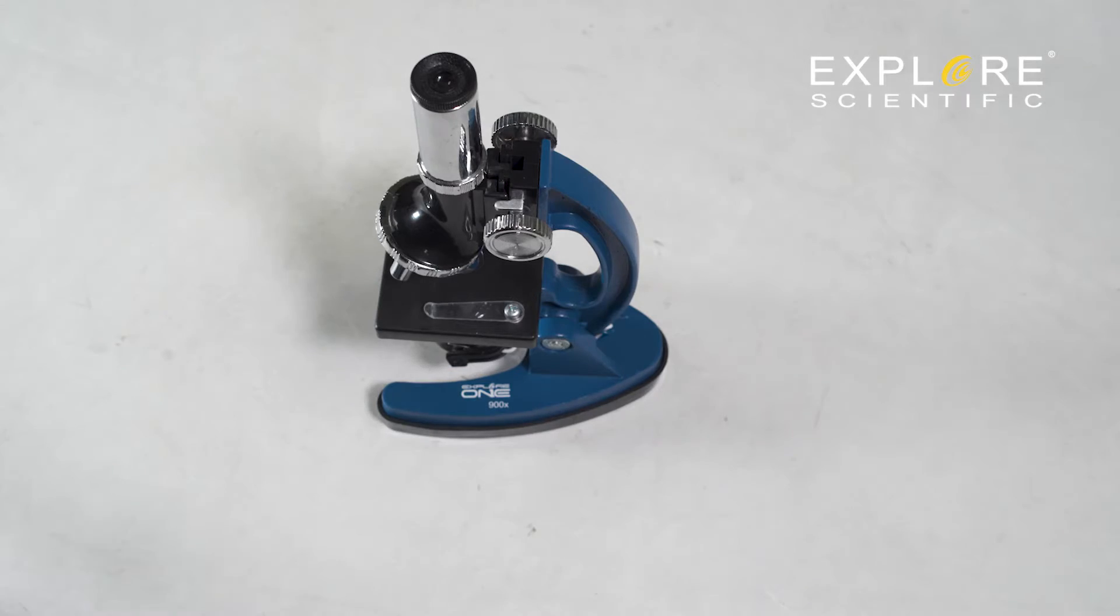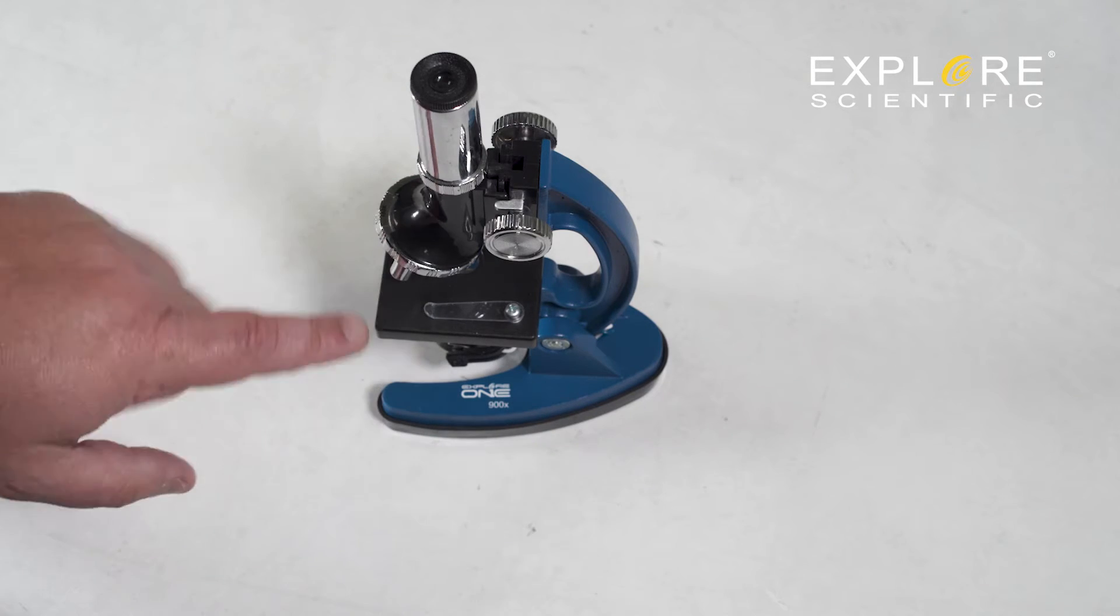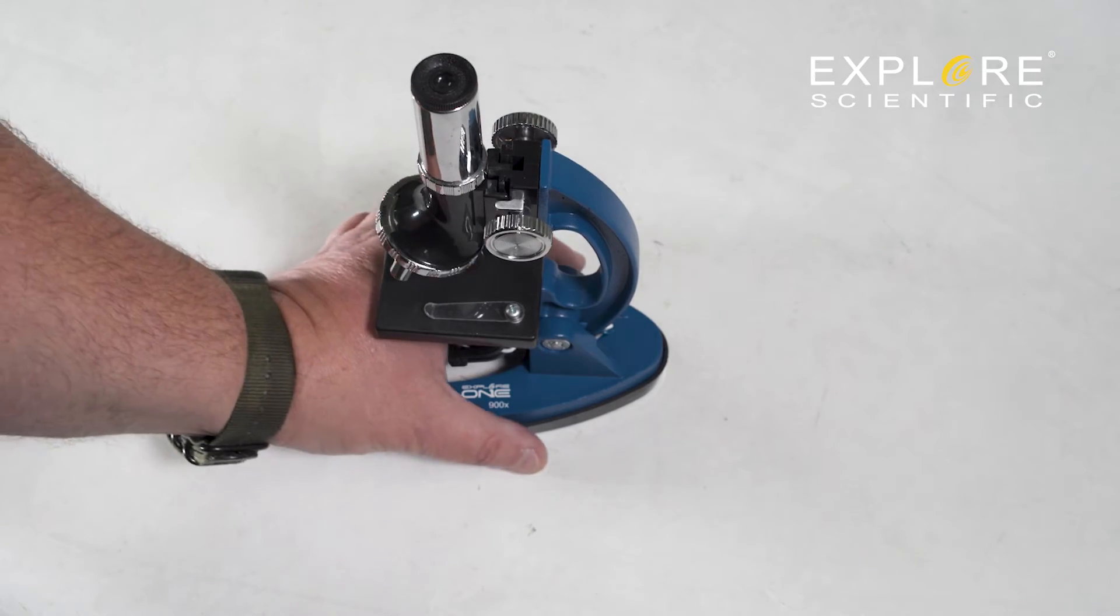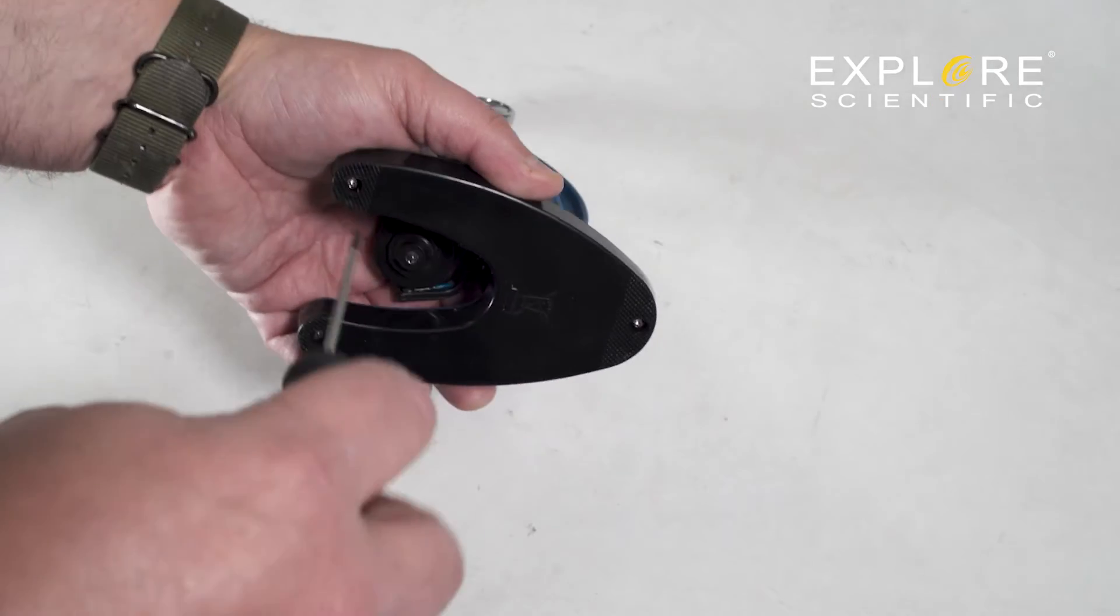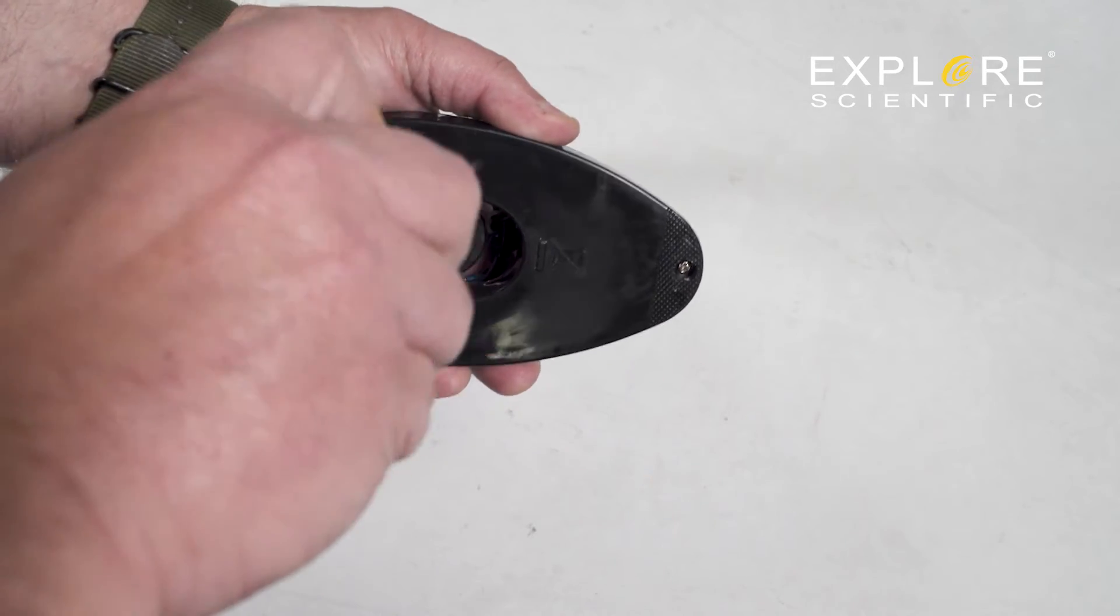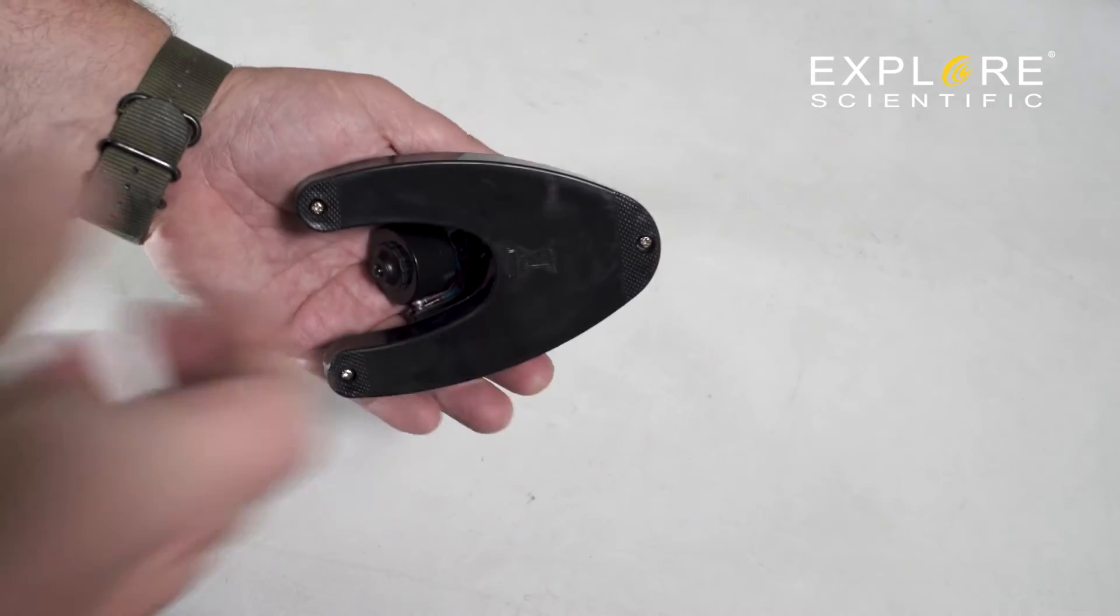To locate the batteries, remove any slides you may have inserted into the microscope and any accessories you have attached. Then turn the microscope upside down. Here you will see three small Phillips head screws. Use an appropriate screwdriver to remove the screws and then the rubber base.